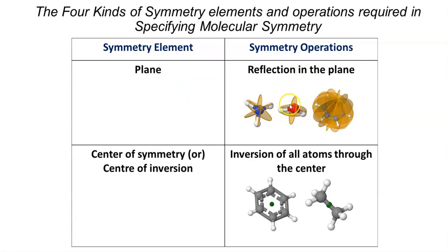Consider the simple molecule H2O — the red atom is oxygen and the white ones are hydrogen atoms. You can see there are two different planes. One cuts each part of the molecule into two halves, and about this plane the left half is a mirror image of the other. The other is a vertical plane that bisects the two hydrogen atoms. This plane is called the mirror plane, which reflects the molecule to the other side. This is an example of a plane and reflection.